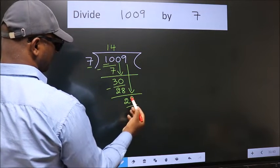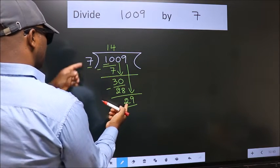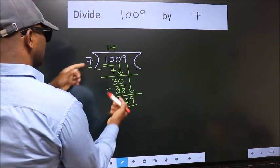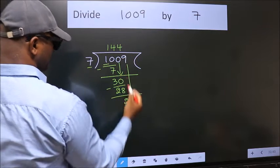So 29. A number close to 29 in 7 table is 7 fourths, 28.